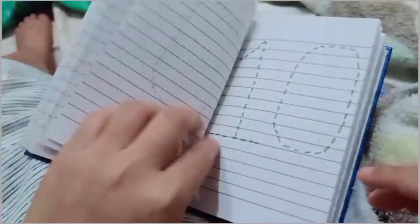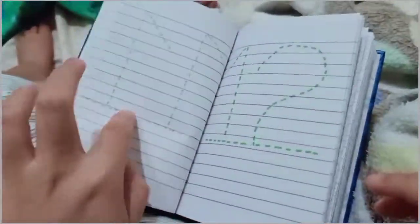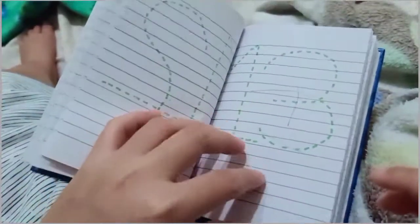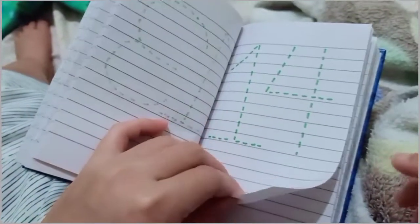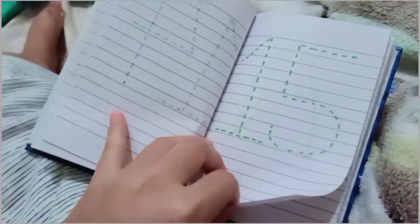Nine. Ten. Very good. Eleven. Twelve. Very good. Thirteen. Thirteen. Fourteen. Fourteen. Fifteen.